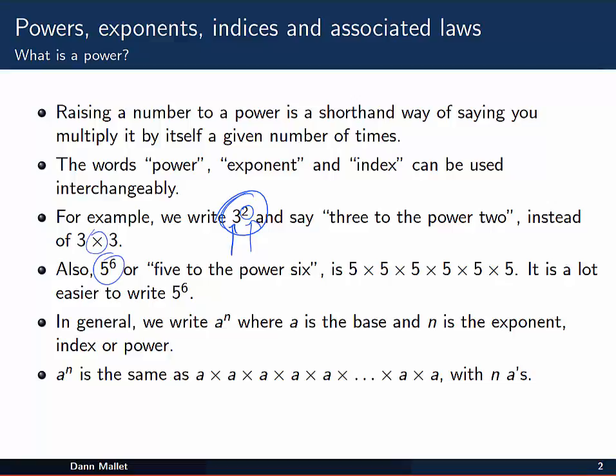Also, 5⁶ or five to the power six is 5 × 5 × 5 × 5 × 5 × 5. It's a lot easier to write 5⁶. In general, we write aⁿ where a is the base and n is the exponent, index, or power. aⁿ is the same as a × a × a × ... × a, with n a's.